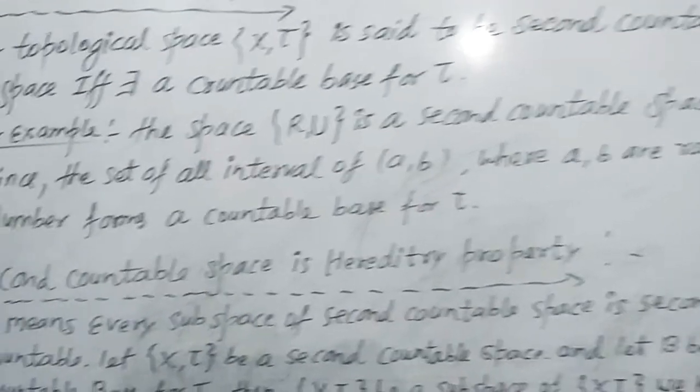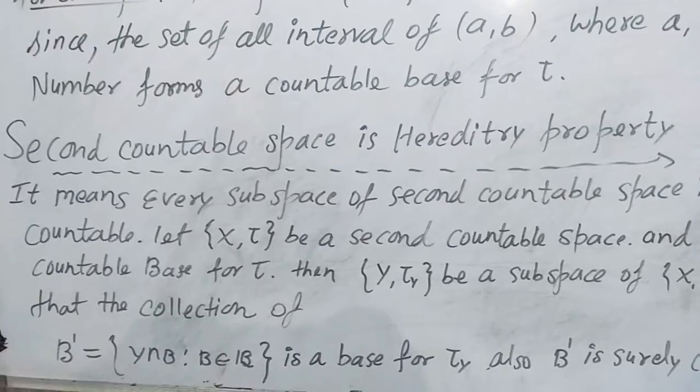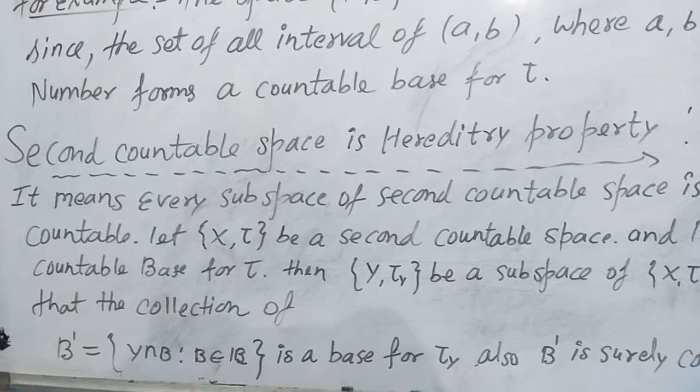and b are rational numbers, forms a countable base for T. Second countable space is a hereditary property. It means every subspace